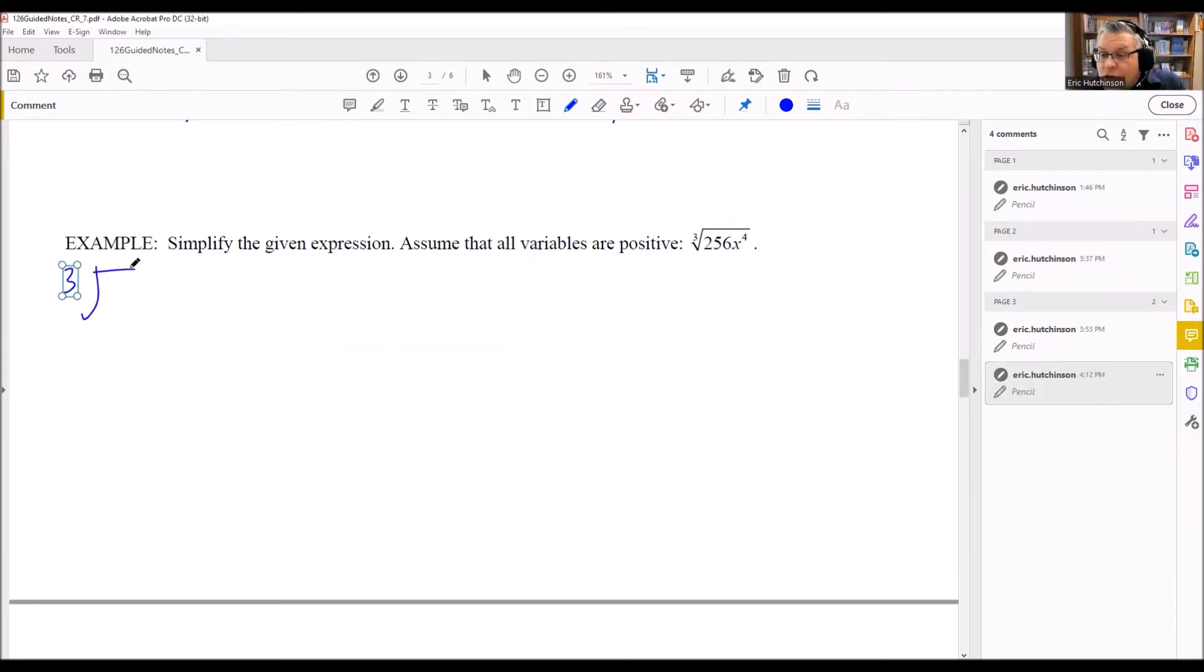What we're first going to do is use the product property to break this up into two different radicals, so cube root of 256 and then the cube root of x to the fourth power. Now the 256, I need to figure out what power that breaks down into.